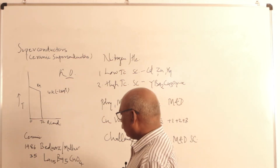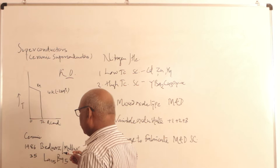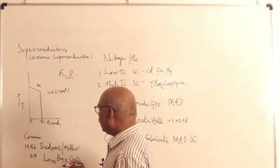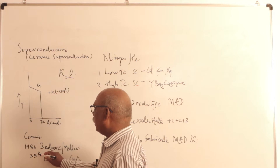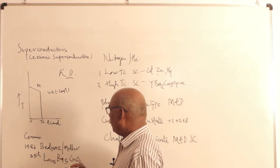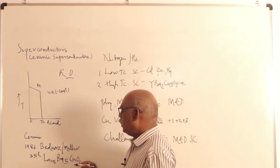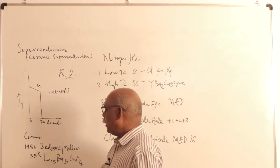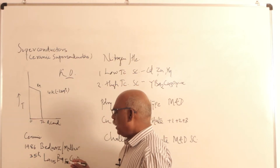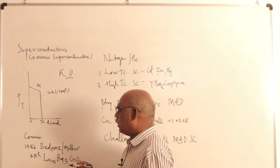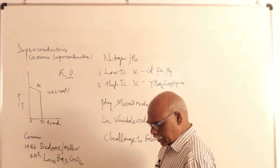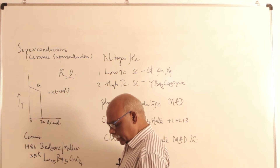In 1986, Bednorz and Müller prepared a new mixed oxide type of superconductor which goes superconducting at 35 Kelvin. For this discovery they were awarded the Nobel Prize in Physics in 1987. This was the direct discovery of Bednorz and Müller in 1986, for which they received the Nobel Prize.